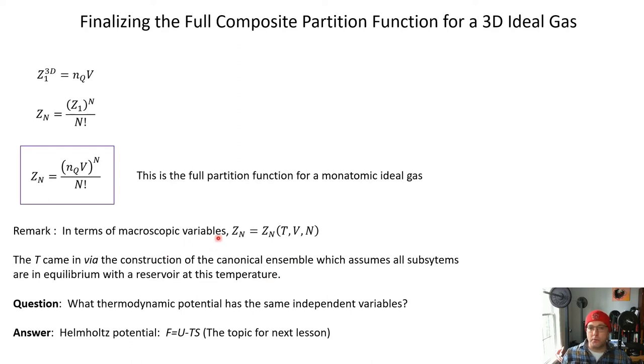So by contrast, in chapter two, when we derived multiplicities, they were a function of internal energy, volume, and particle number, right? And so the difference between chapter two and chapter six is that chapter two doesn't really think about temperature from the beginning. You sort of put it in later by hand, whereas chapter six, we already think we have a really good idea thermodynamically of what temperature means. And so we build it into our starting construction.